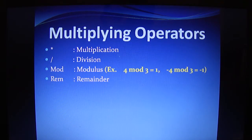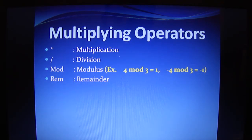Next is the multiplying operators. Multiplication, slash is for division, mod is for modulus and rem is for remainder. If you are using mod, you need to write 4 mod 3 which is equal to 1 and if you are using the negative number, that means if you are using -4 mod 3, it will give -1.